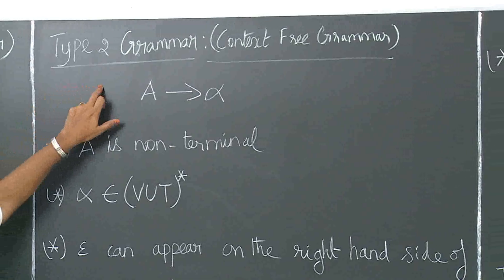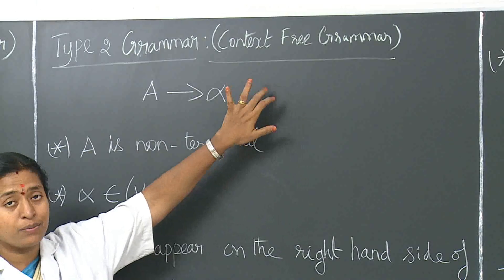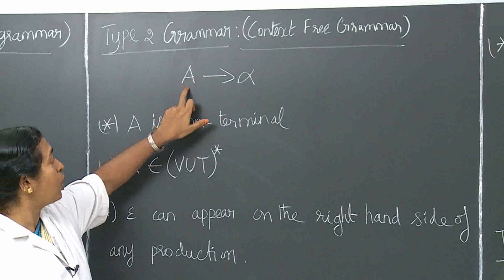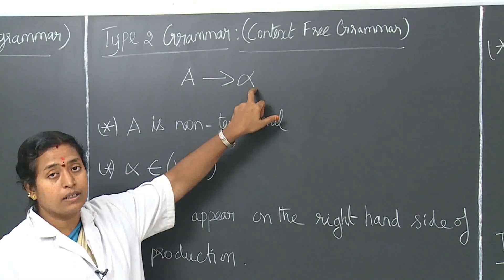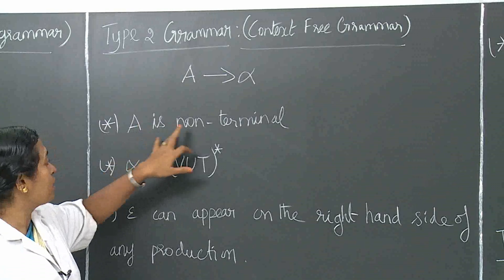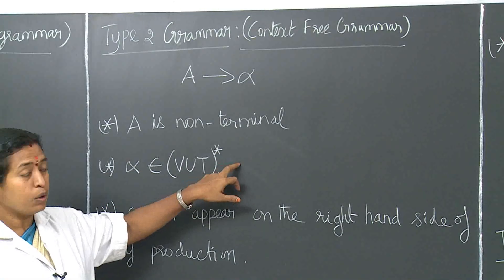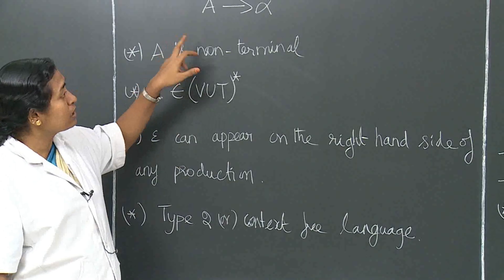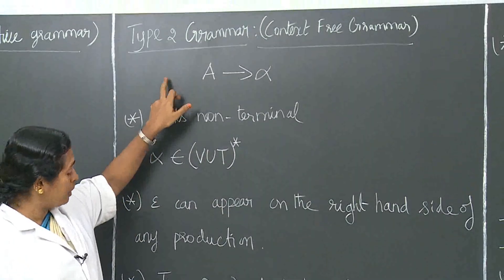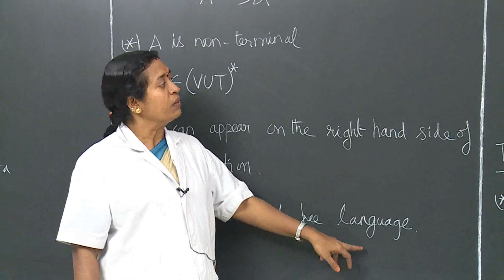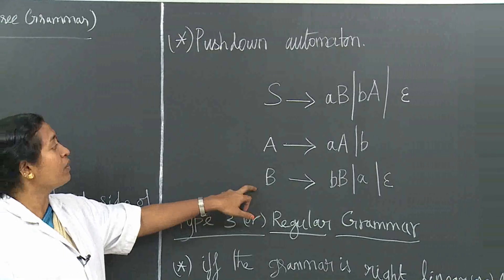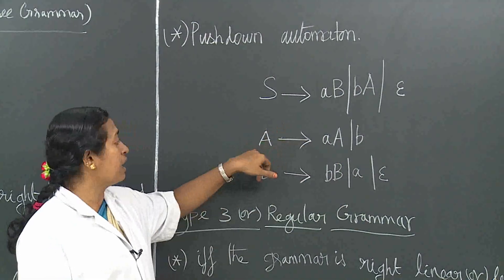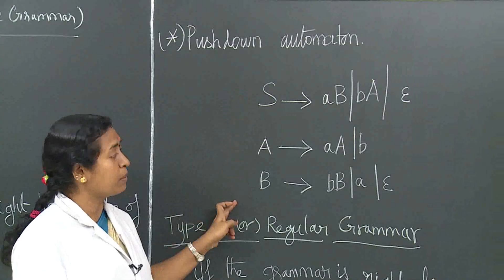Type 2 grammar is otherwise known as context free grammar. This is a very important type of grammar. The derivation will be from a single non-terminal: one non-terminal derives some string. Here A is a non-terminal and alpha is a subset of V union T Kleene closure. Epsilon can appear on the right side of any production. The automaton for this is the pushdown automaton. The language generated is type 2 or context free language.